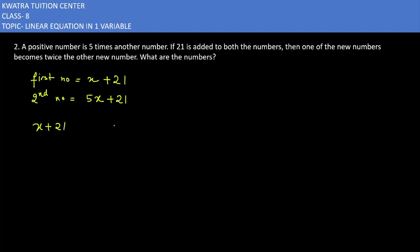Now x plus 21 is equal to what? It is given that x plus 21 is twice of it, and it is equal to one of the new numbers formed, which is 5x plus 21.